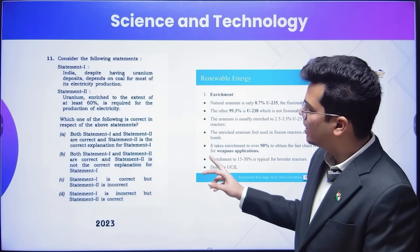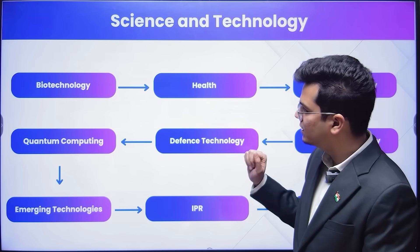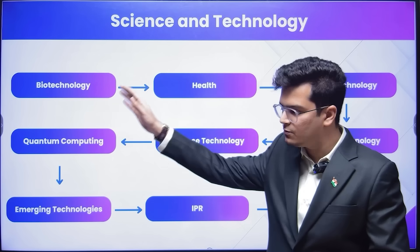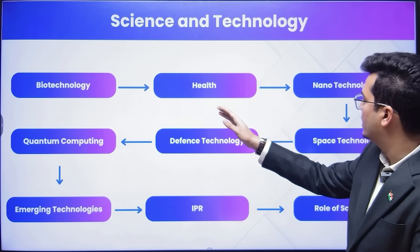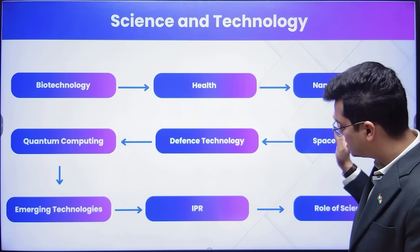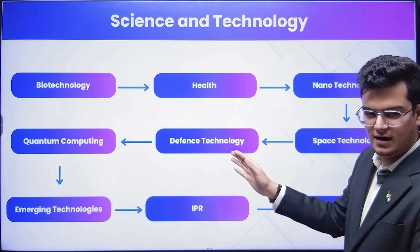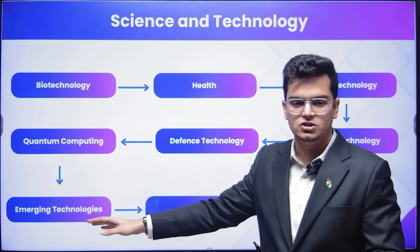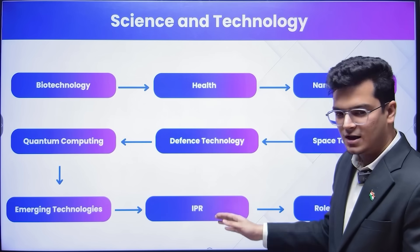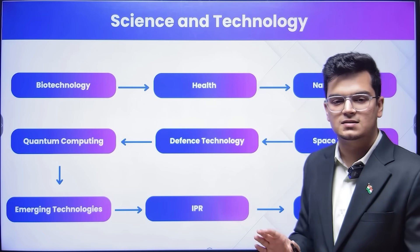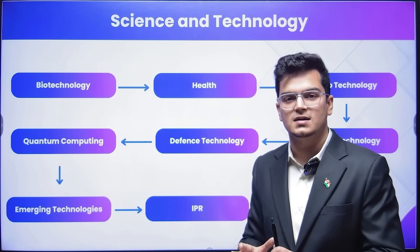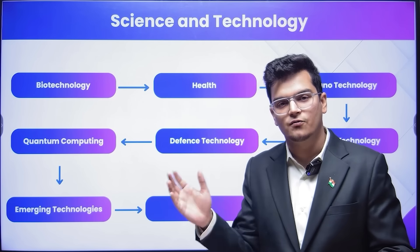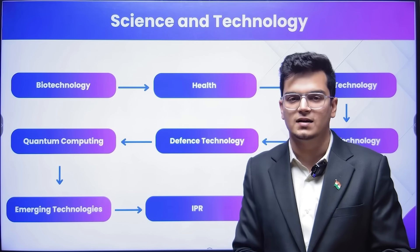In science and technology, I have divided the subject into these areas: we will start with biotechnology, then go on to health, then nanotechnology, then space and defense technology — which are closely related — then quantum computing and emerging technologies of computing, and finally intellectual property rights and the role of scientists. These nine theme areas we will cover in detail, conceptually, with all PYQs and current affairs.